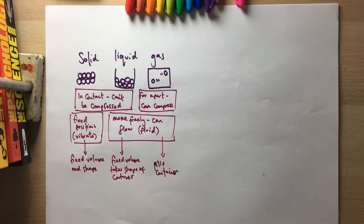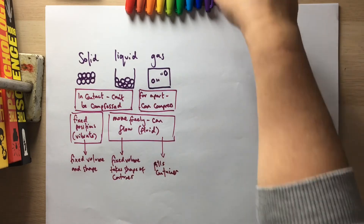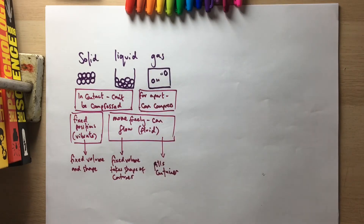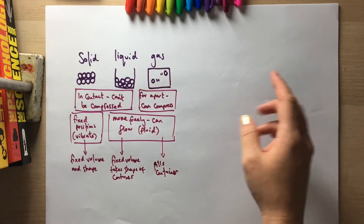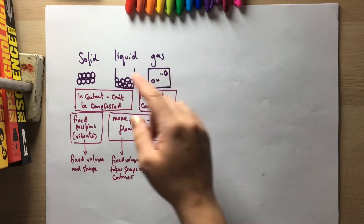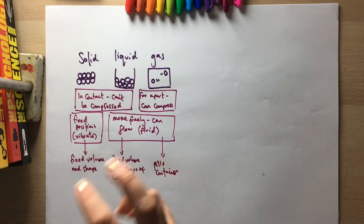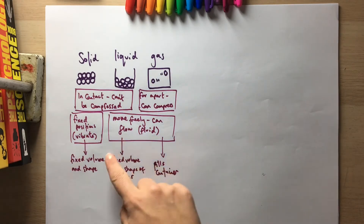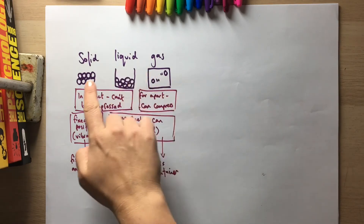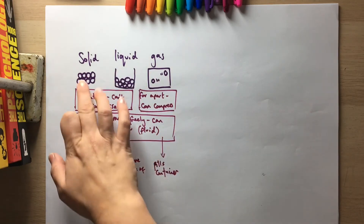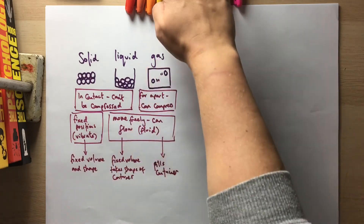So those are the properties of solids, liquids, and gases that you need to be aware of. There have been questions in the past where you have to link the properties — how they behave — to the arrangement of the particles. You also need to be able to draw these particle diagrams.